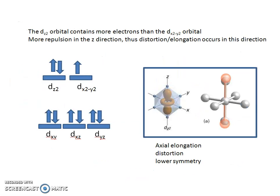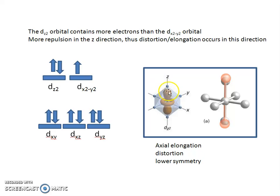This slide again shows that the d_z² contains more electrons than the d_(x²-y²), so there is more repulsion in the z direction. The d_z² orbital — shown here — has more repulsion in this direction, and therefore results in an elongation in this direction. So axial elongation is observed.